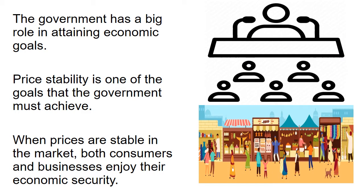Market disequilibrium includes market shortage and surplus. It happens because of the interaction of consumers and producers about prices, and the existence of scarcity. Since our country runs a mixed economy, the government has a big role in attaining economic goals. Price stability is one of the goals that the government must achieve. When prices are stable in the market, both consumers and businesses enjoy their economic security.